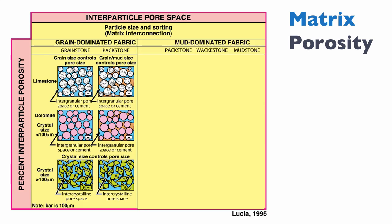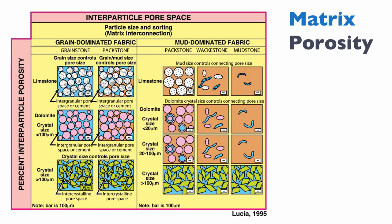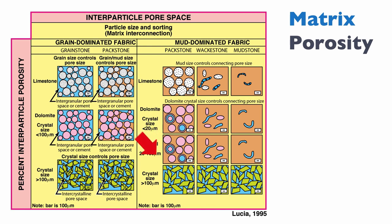Then he recognizes mud-dominated fabric, which includes a mud-rich pack stone, a wackestone, and a mudstone. For those, there are four different types of lithology: limestone, dolomite with crystal size smaller than 20 microns, dolomite with crystal size between 20 and 100 microns, or dolomite with crystal size larger than 100 microns.